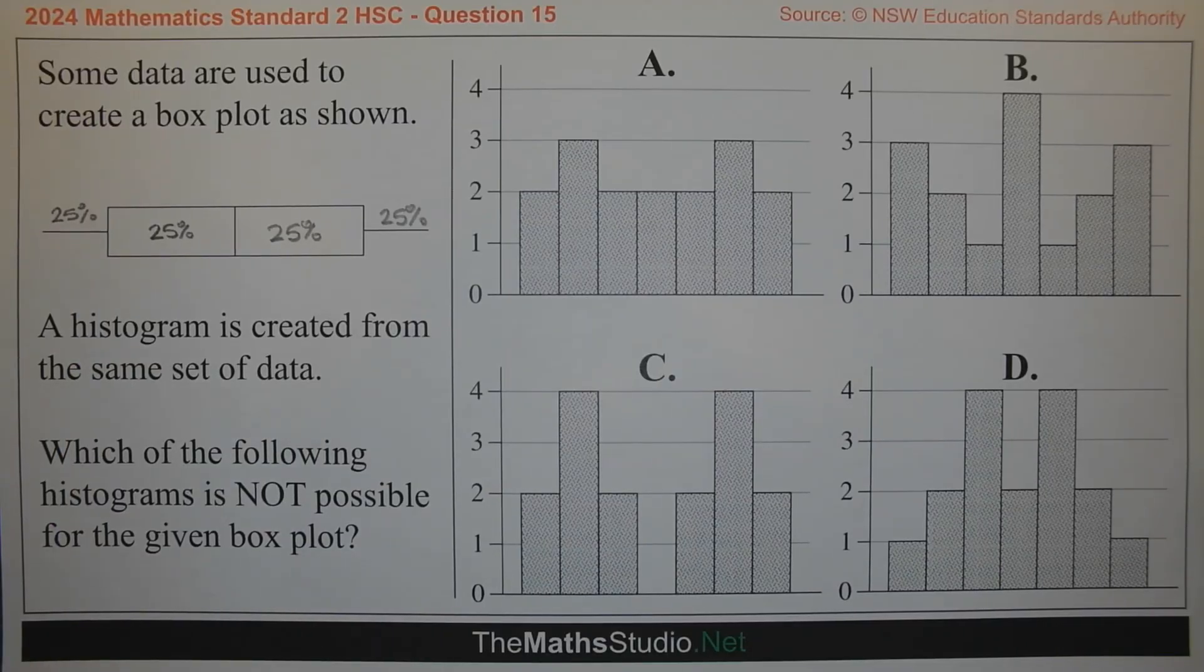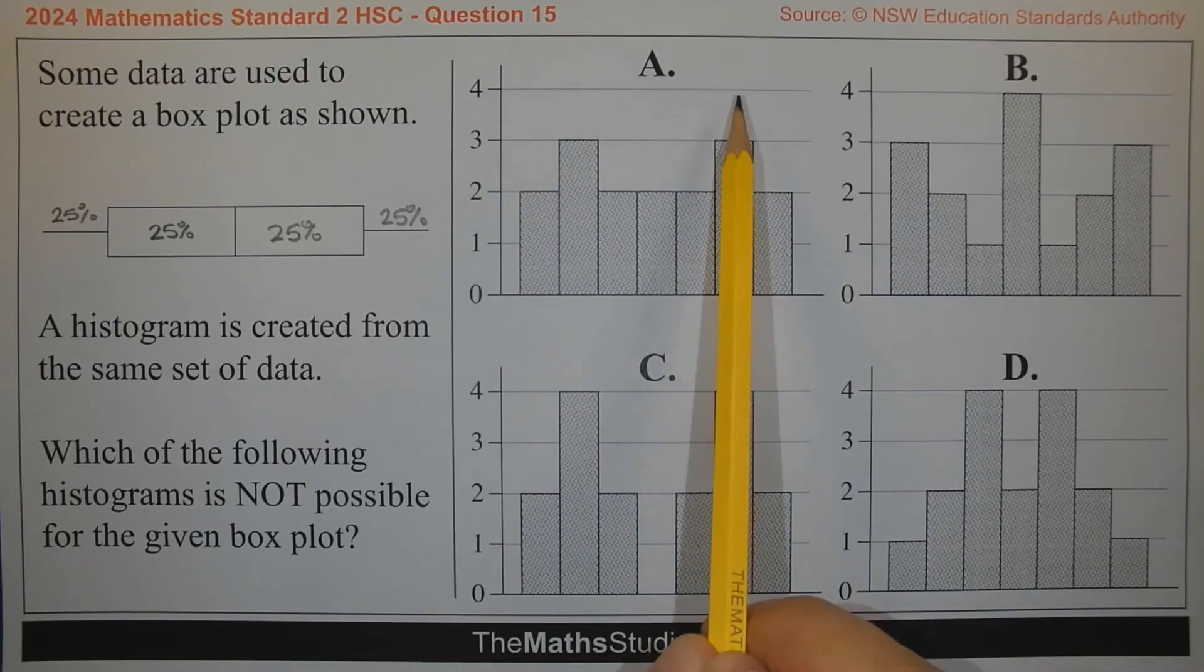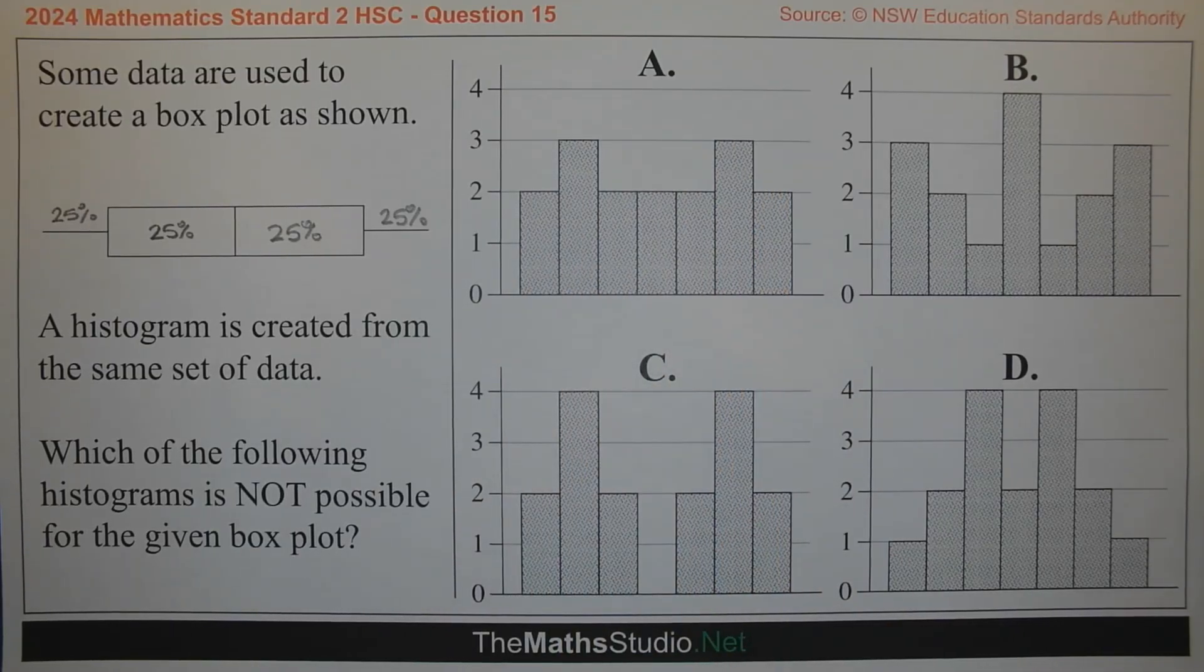This implies that there is a concentration of data at the end points or where the tails are. As far as the histogram is concerned, that is reflected in the taller columns at each end of the histogram.